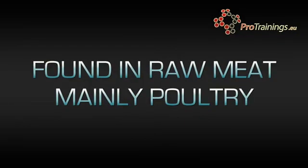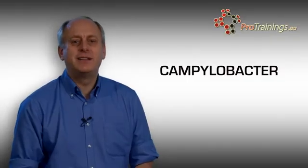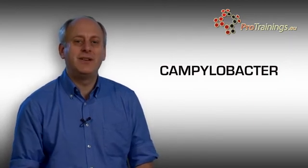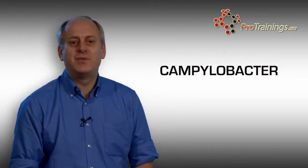Campylobacter are found in raw meat, but mainly poultry. Cooking thoroughly usually kills the bacteria. Campylobacter can also be found in unpasteurized milk or untreated water, including ice cubes, and occasionally in mushrooms and shellfish.